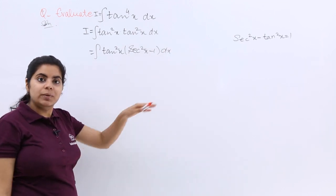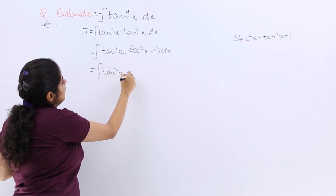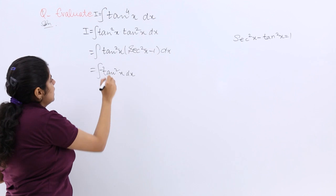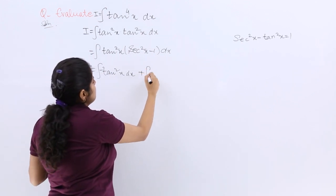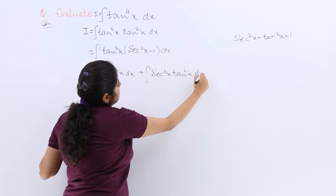Now let's open the bracket to get tan square x dx minus and here it should be plus secant square x tan square x dx.